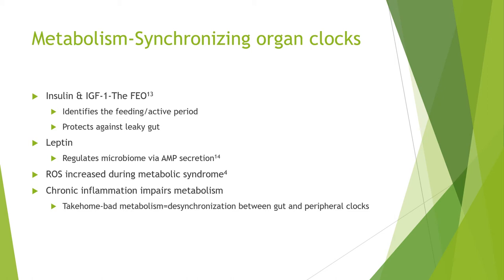The most important signal here is insulin and IGF-1 — insulin-like growth factor 1 signaling. This functions as what is called the food-entrainable oscillator, meaning this is the primary signal for all peripheral clocks to synchronize with one another. This signaling identifies the feeding and active period in the body and also protects against leaky gut, because insulin sensitivity, insulin signaling, and hyperglycemia play a role in regulating the leakiness of the gut. If you have poor metabolism or poor glycemic control, you can absolutely forget about having a healthy gut microbiome interface.